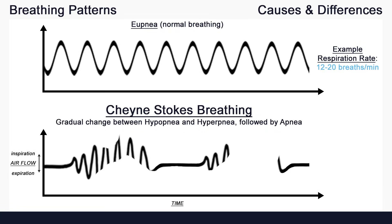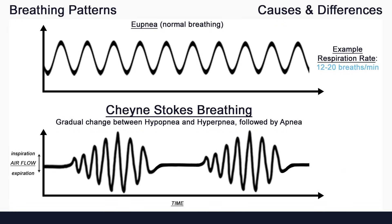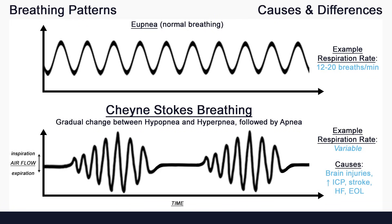Cheyne-Stokes breathing is a gradual change between hypopnea and hyperpnea, followed by a period of apnea, and this pattern repeats. In other words, the Cheyne-Stokes pattern is a gradual increase and gradual decrease in the depth of each breath, followed by a period of no breathing. Cheyne-Stokes breathing may occur in various brain injuries, including increased intracranial pressure, stroke, and more. It may also occur in heart failure and in those near end of life.